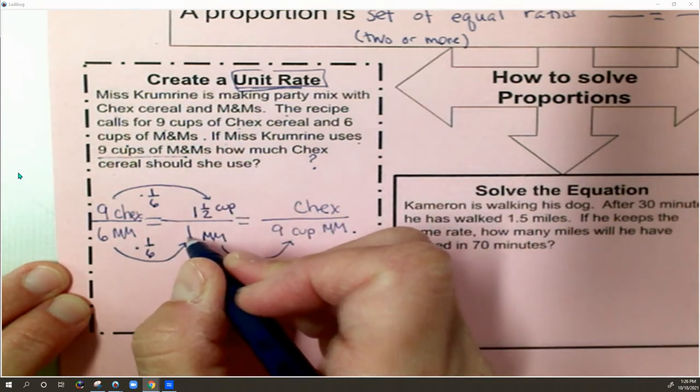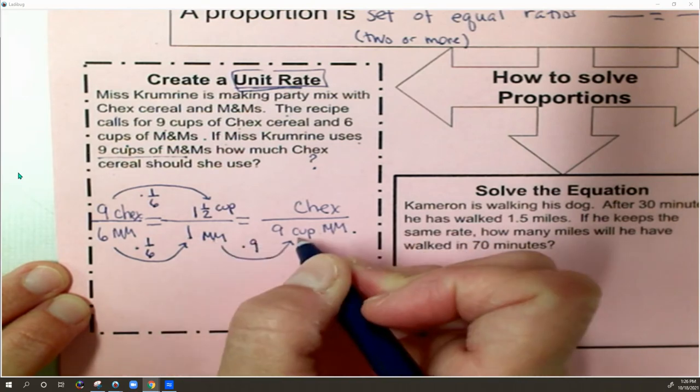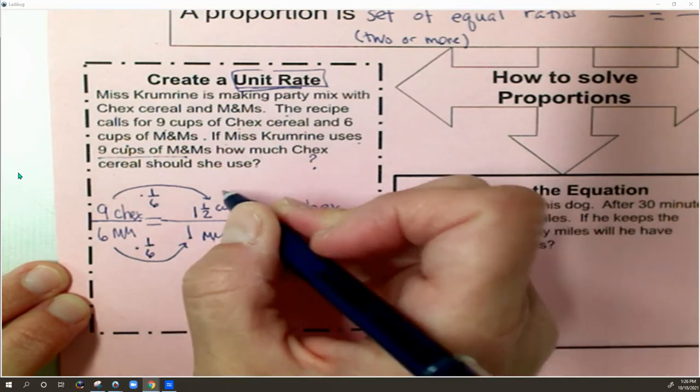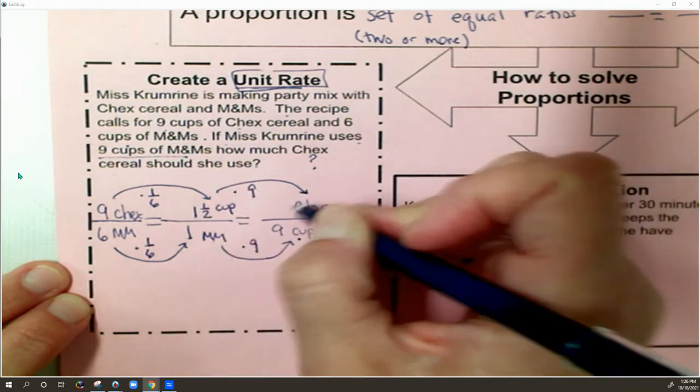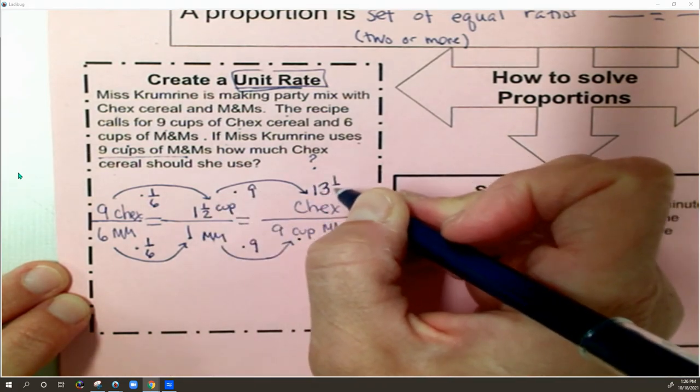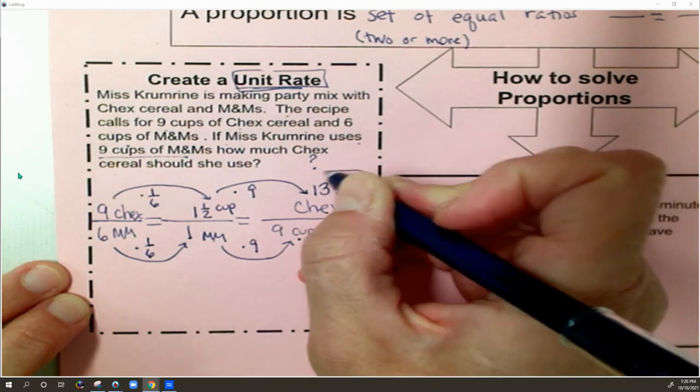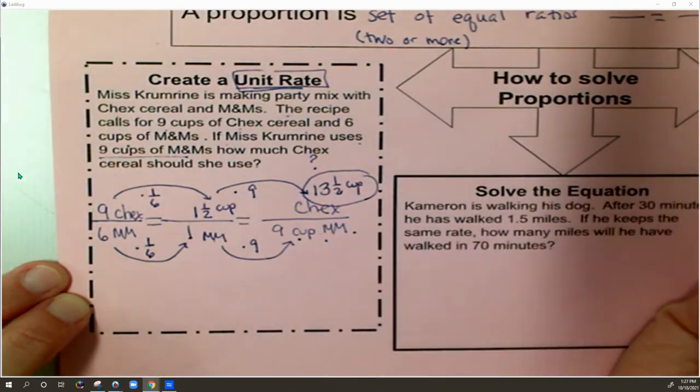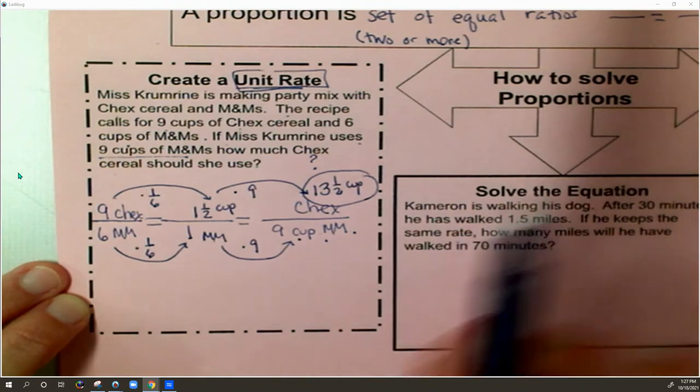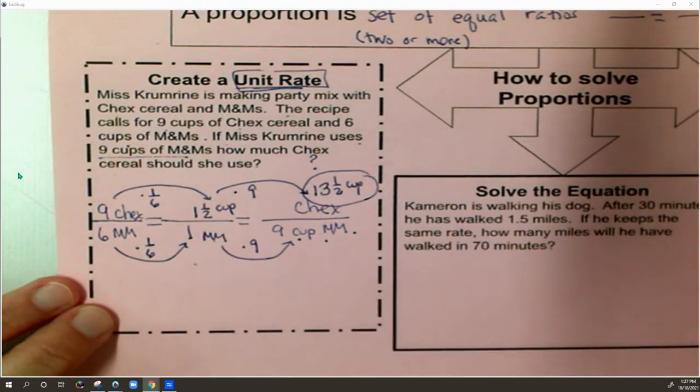And then on the bottom, I do 1 times 9 to scale up to those 9 cups of M&Ms. And then whatever I do to the bottom, I do to the top. So 1 and 1 half times 9 is 13 and 1 half. So now I have 13 and 1 half cups of Chex. And I check it. And yes, I'm using more Chex than M&Ms. So that's good. And I have the right answer. So the unit rate method has the unit rate in the center.